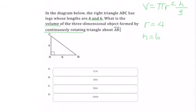Going back to the formula, we are going to substitute r with our radius, which is 4, and h with 6, which is our height. So it's going to be volume equals π times 4 squared times 6 over 3.